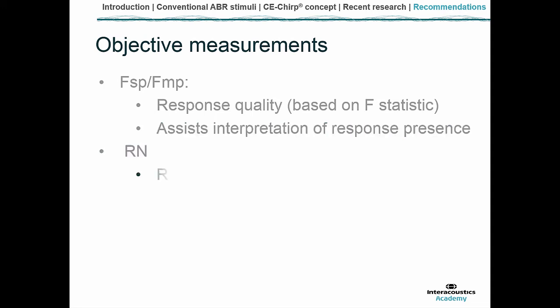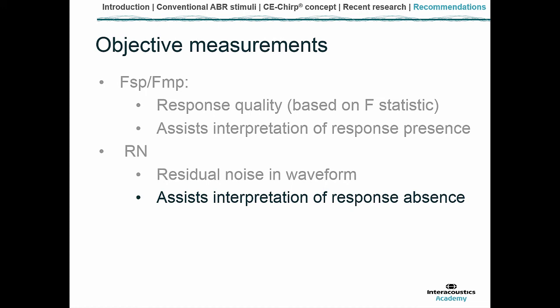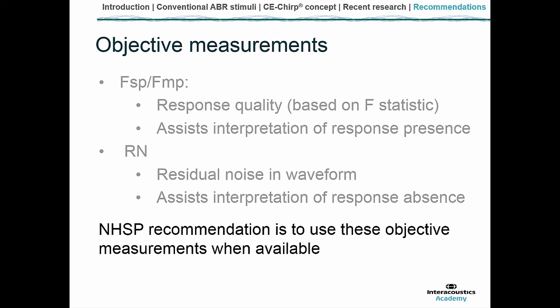Another objective measure is residual noise. Some systems report how much residual noise remains in the accepted waveforms. Residual noise can help support a judgment that a response is absent, after all other criteria have been met. In the UK, we look for a figure of less than or equal to 25 nanovolts for older Eclipse software, and less than or equal to 15 nanovolts for more recent versions. NHSP recommends using these objective measures when available to assist interpretation and test strategy.